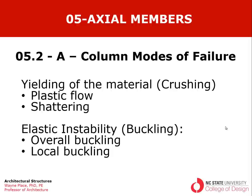Buckling occurs in members under axial compression; it involves the material moving laterally to get out from under the load. Bending is a phenomenon where the loading is perpendicular to the axis of the member, such as in a beam. There are two key kinds of elastic instability: overall buckling of the column, and local buckling.